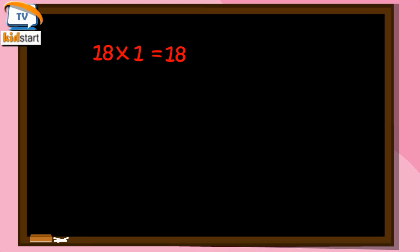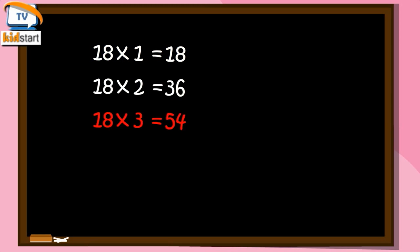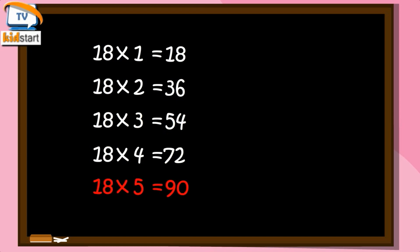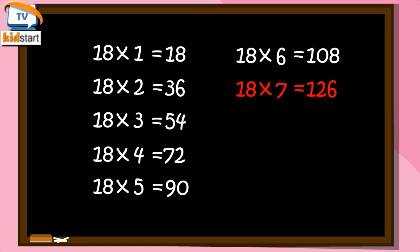18 ones are 18. 18 twos are 36. 18 threes are 54. 18 fours are 72. 18 fives are 90. 18 sixes are 108. 18 sevens are 126.